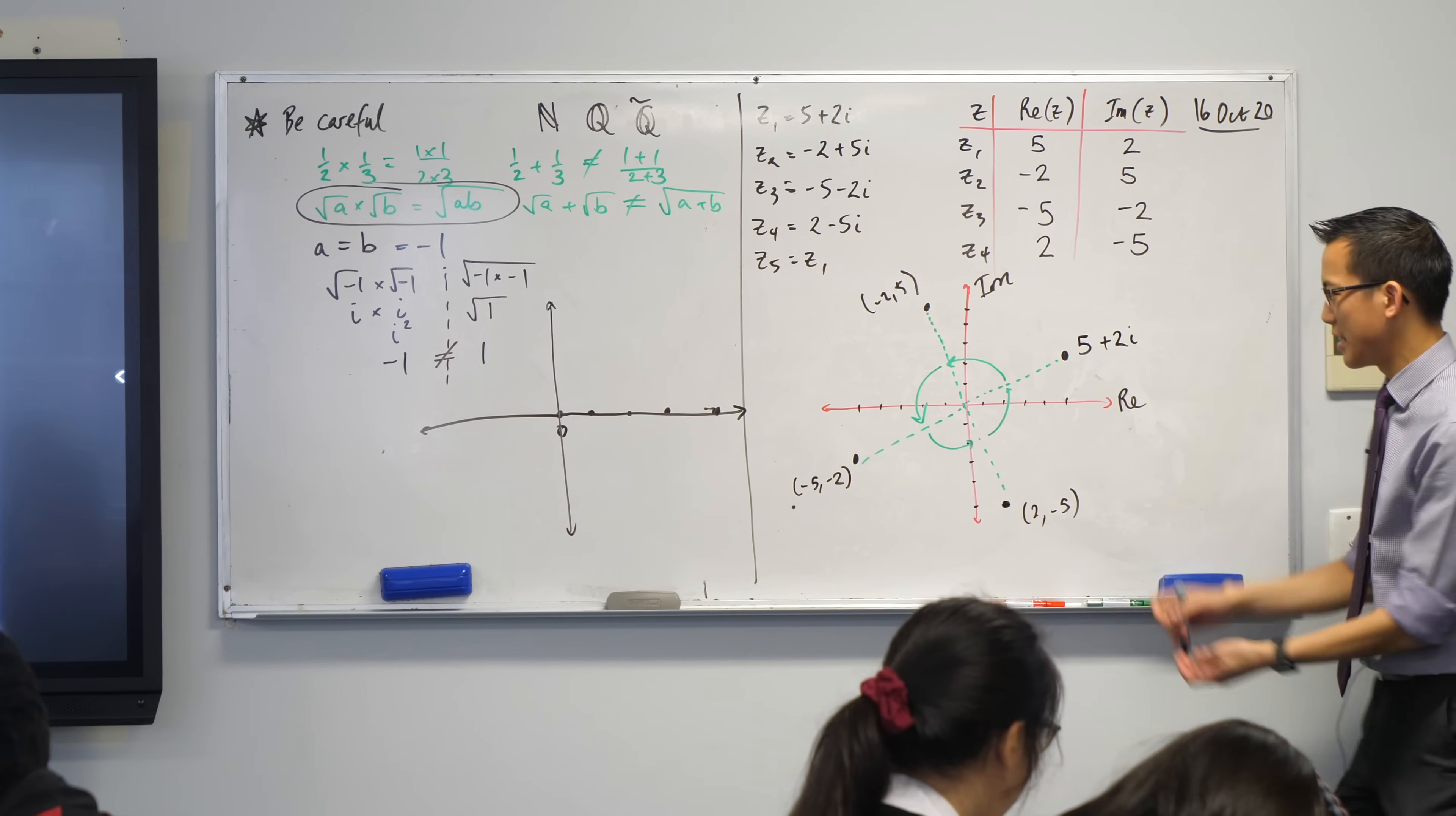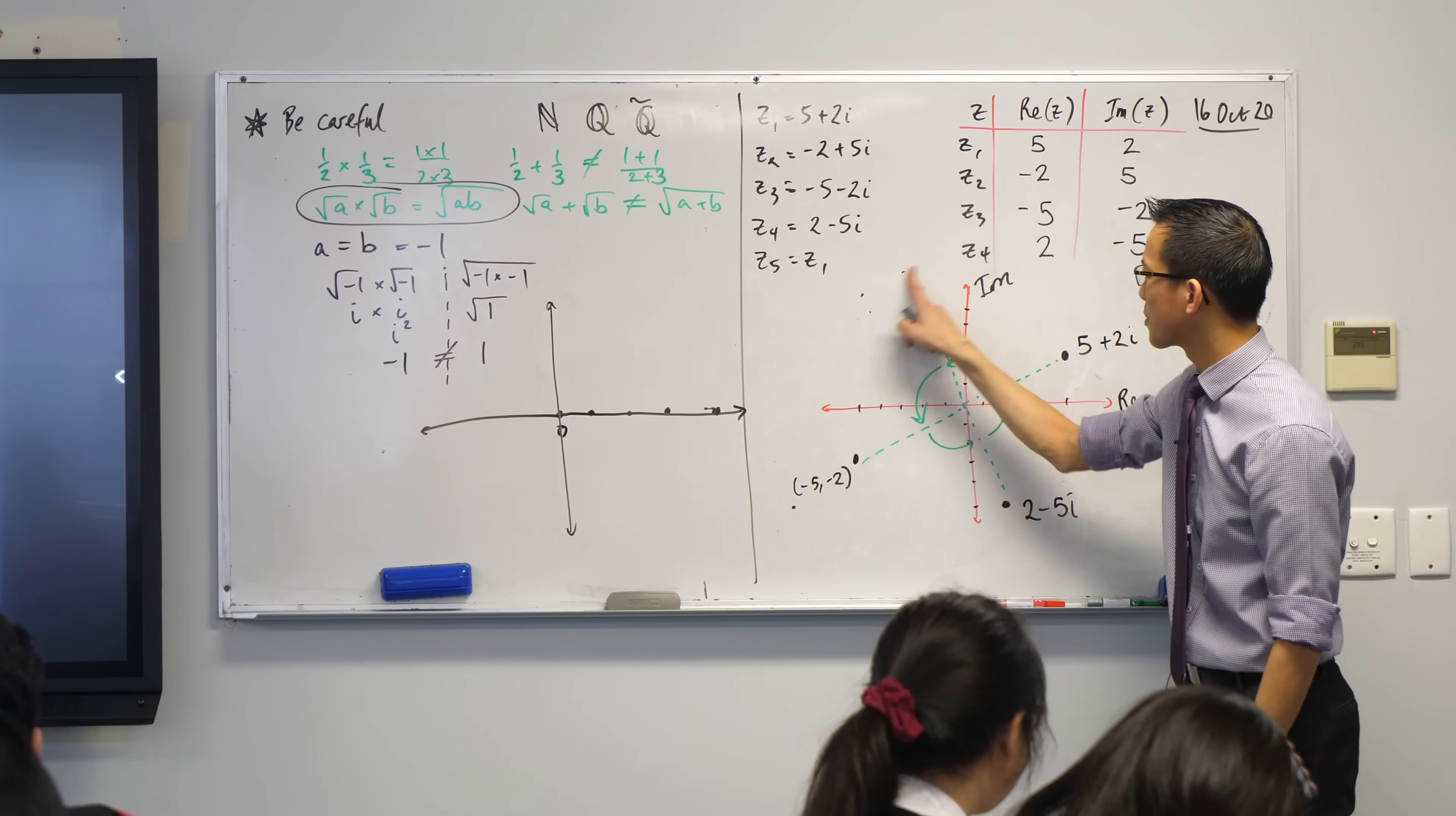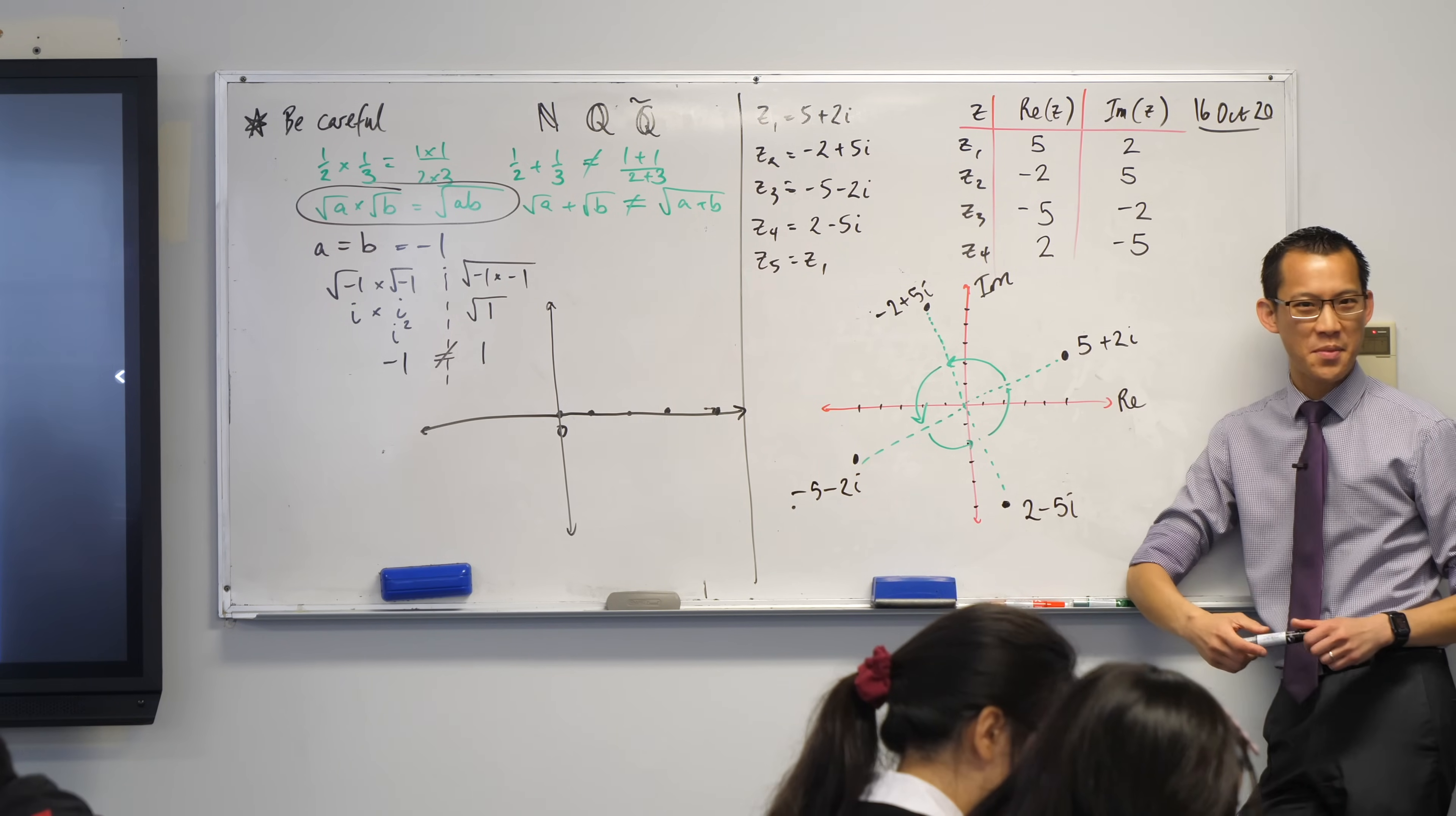They were invisible because we never imagined that there could be things off of this line. And so the complex plane is what we are going to explore. What have I got here? The negative 2 plus 5i is what we're going to explore in the coming weeks. We have a whole new universe to wade into. I hope you're excited to discover what awaits you.